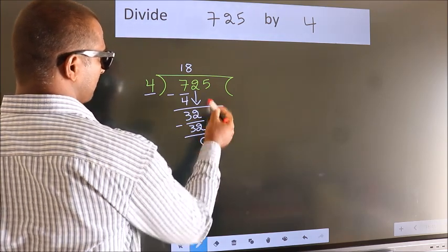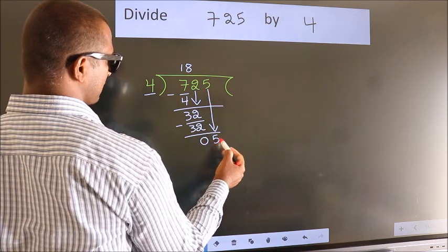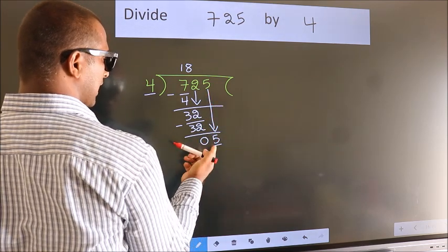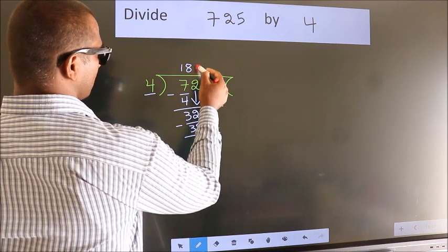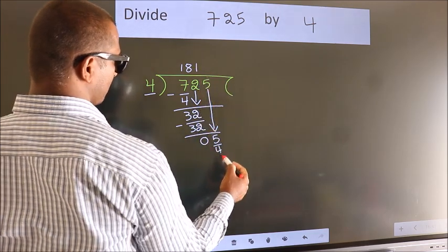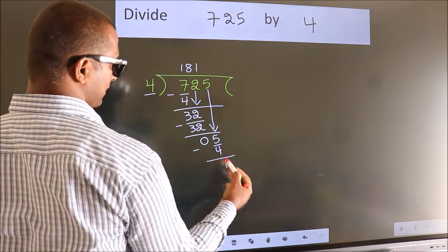After this, bring down the next number. So 5 down. So 5. A number close to 5 in the 4 times table is 4 times 1 equals 4. Now we subtract. We get 1.